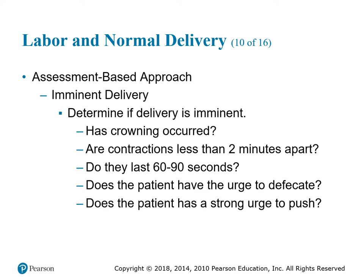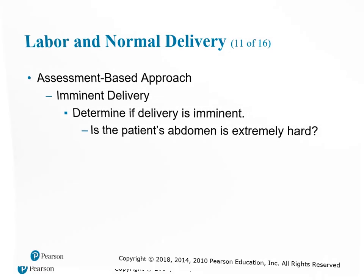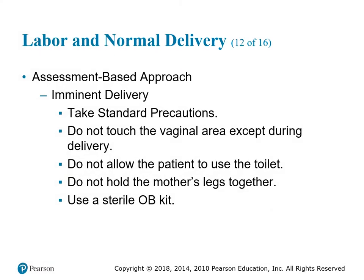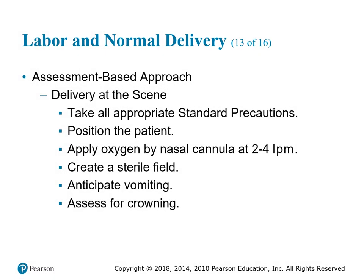Imminent delivery: is the patient's abdomen extremely hard? That basically means there's a contraction occurring. Take standard precautions. Do not touch the vaginal area except during delivery. Do not allow the patient to use the toilet. Do not hold the mother's legs together. Use the sterile OB/GYN kit. Position the patient, apply oxygen by nasal cannula at least 2 to 4 liters per minute, create a sterile field, anticipate vomiting, and assess for crowning.